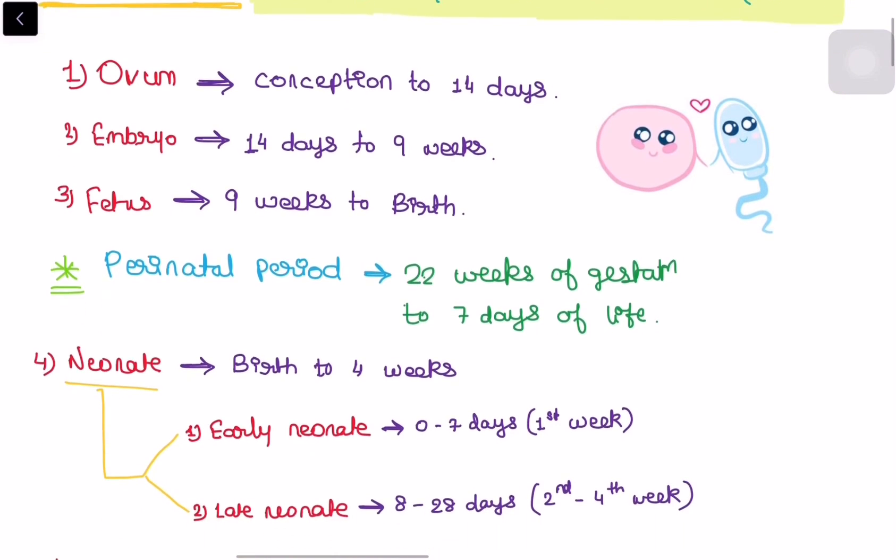Then we will know a term, we will learn a term, that is perinatal period. What is perinatal period? It is the period between the 22 weeks of gestation to the seven days of life.